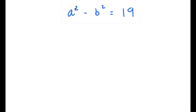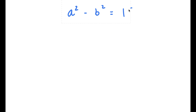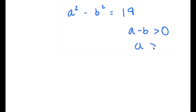So in this problem, I have a squared minus b squared is equal to 19. I want to note that a and b are both positive integers, and we want to find the values of a and b. We can use logic to deduct some information: if a squared minus b squared equals 19, this must mean that a minus b is greater than 0, meaning a is greater than b.